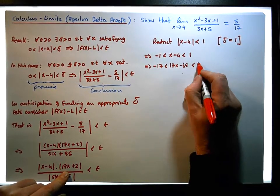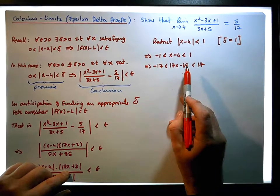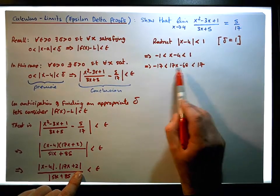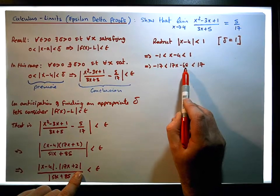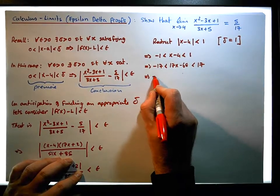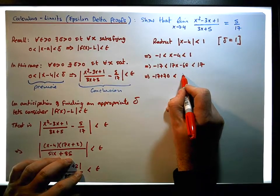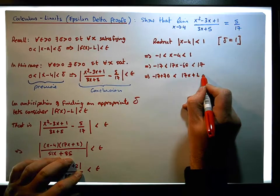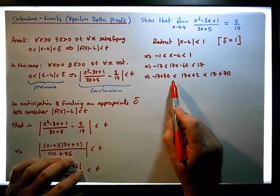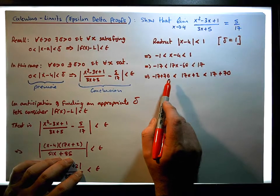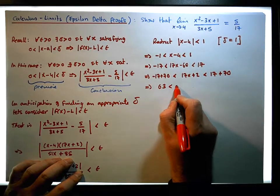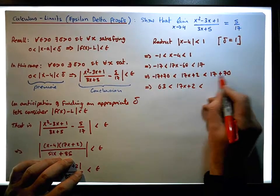That needs to be less than 17. So that's good, but what I'd really like to have is 17x plus 2. So what do I need to add on? I need to add on 70 here to make this a plus 2, because minus 68 plus 70 gives us plus 2. So if I add 70 across this inequality, this becomes minus 17 plus 70 must be less than 17x plus 2, which must be less than 17 plus 70. That gives us 63 must be less than 17x plus 2, which must be less than 87.